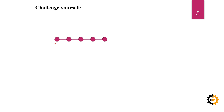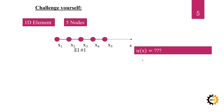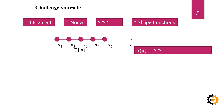Now it is time to challenge yourself. This is a 1D element with five nodes and five coordinates. First, how will you number these five nodes based on the concepts learned? Second, what will be the order or degree of the polynomial expressed with five nodes, and what will that element be called? Third, how many shape functions will there be with five nodes, and how will you construct them using the method described? That's all for today, thank you.